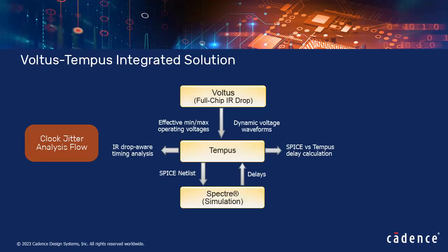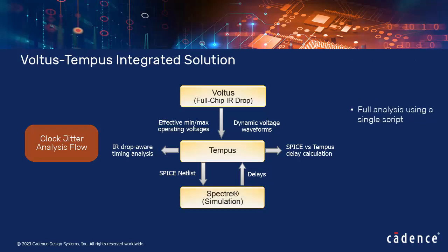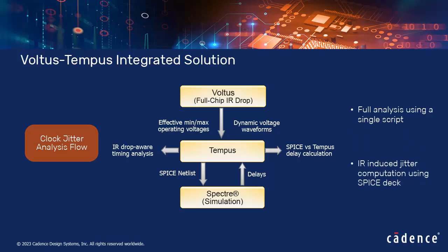The Voltus clock jitter analysis flow leverages the power and rail capabilities of Voltus and integrates it with Tempus static timing analysis and Spectre simulation capabilities. This integration enables full analysis using a single script. Tempus interfaces with Spectre for SPICE deck creation to compute the cycle-to-cycle IR-induced jitter.